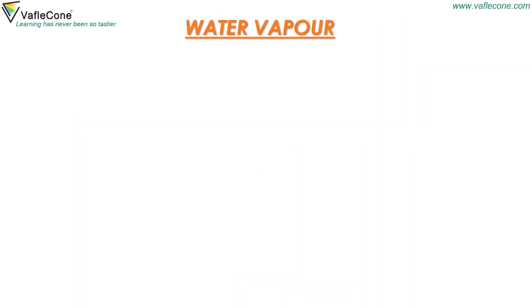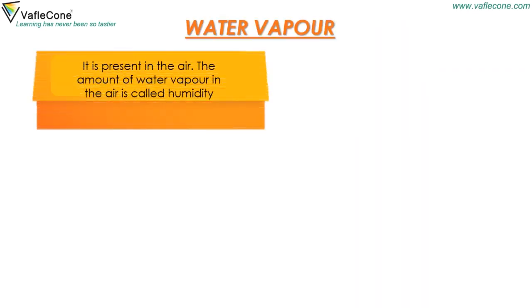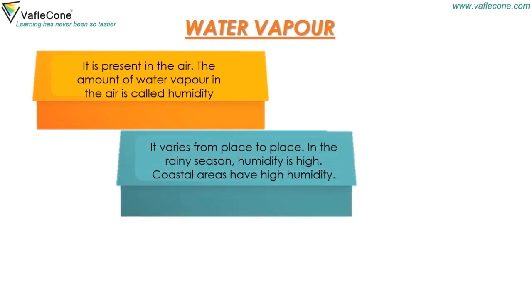Water Vapor: Water vapor is present in the air. The amount of water vapor in the air is called humidity. It varies from place to place. In the rainy season, humidity is high. Coastal areas also have high humidity.